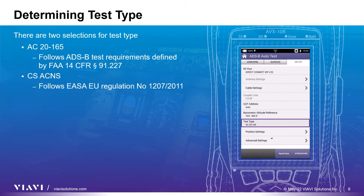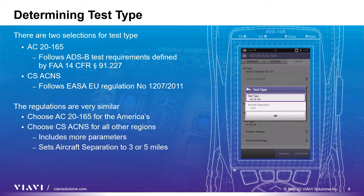There are two selections for test type. AC20-165 is the ADSB test requirement defined by the FAA's 14 CFR 91.227. CSACNS is defined by EASA EU regulation number 1207-2011. The regulations are very similar, with the CSACNS version requiring a few additional ADSB out parameters.